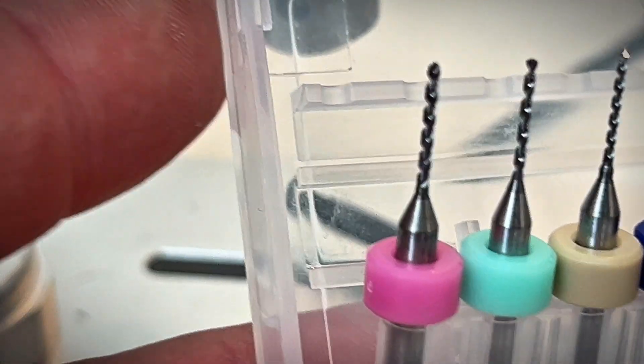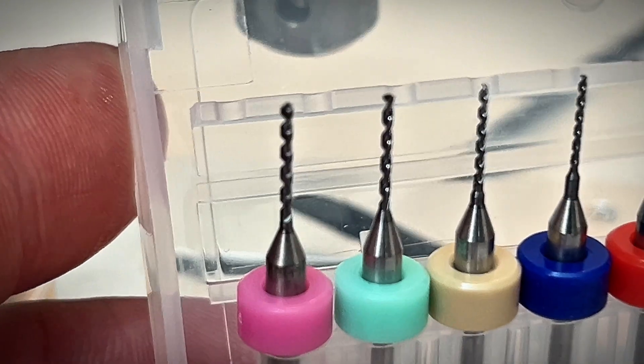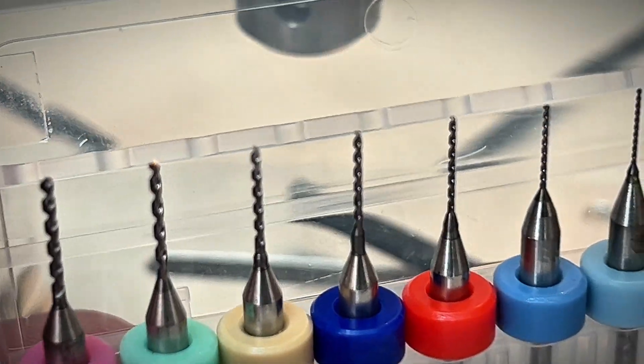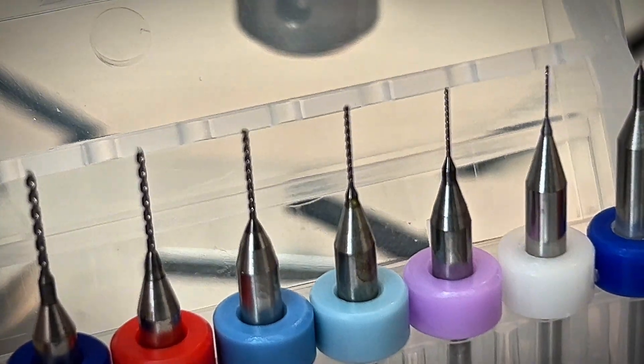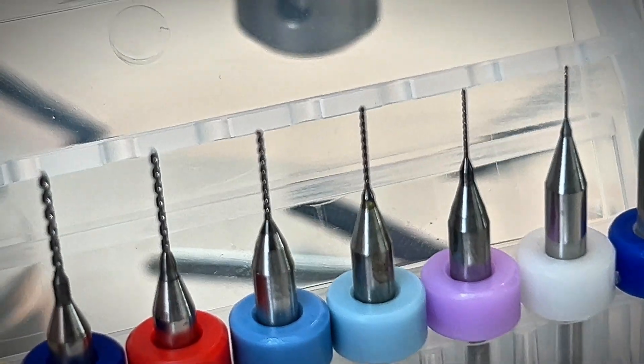Let's take a closer look at these drill bits. There's 1mm there, 0.9, 0.8, 0.7, 0.6, 0.5, 0.4, 0.3, 0.2, 0.1. Tiny.